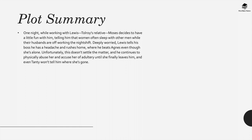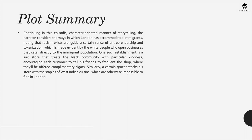One night while working with Lewis, Tolroy's relative, Moses decides to have a little fun with him, telling him that women often sleep with other men while their husbands are off working a night shift. Deeply worried, Lewis tells his boss he has a headache and rushes home where he beats Agnes, his wife, even though she's alone. Unfortunately, this doesn't settle the matter and he continues to physically abuse her and accuse her of adultery until she finally leaves him, and even Tante won't tell him where she's gone.